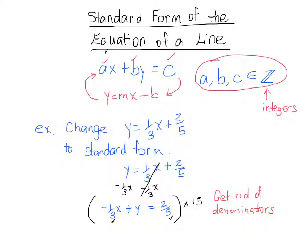Another option here would be to first multiply everything by 3, and then multiply everything by 5. But instead of doing it in two steps, I'm going to do it in one step here today. And let's see what happens. So, when we multiply negative 1 third by 15, we get negative 15 over 3x. Plus, when we multiply 15 by y, we get 15y. And when we multiply 15 by 2 fifths, we get 30 over 5.